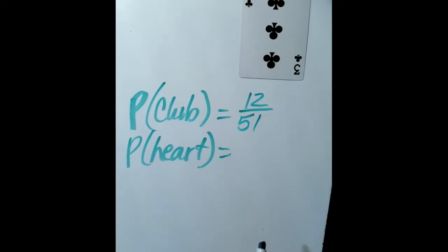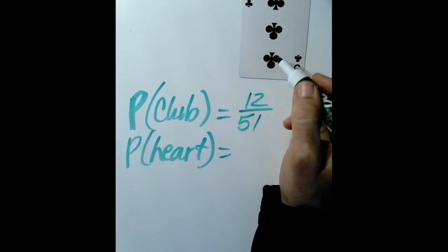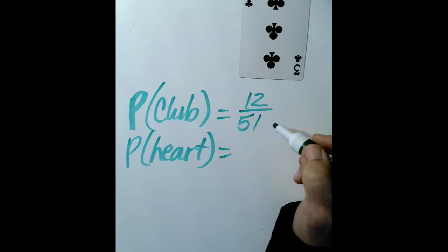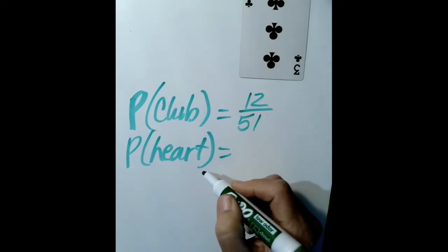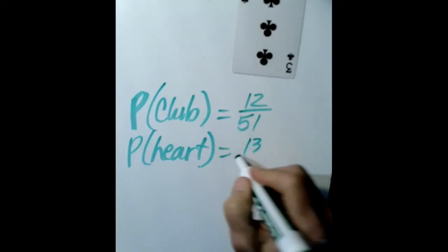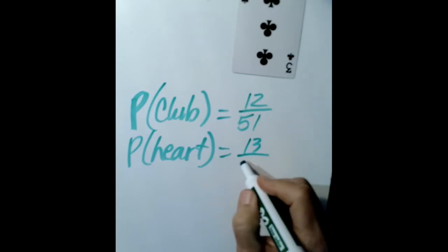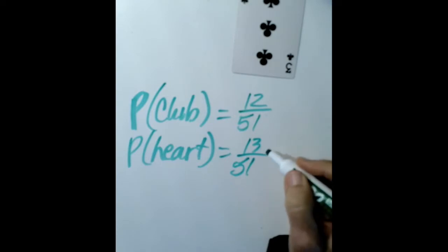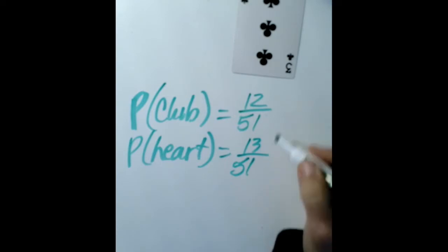After pulling the three of clubs, what would be the probability of pulling a heart? Well, we still have all 13 hearts left, but only 51 cards total. So we have a greater chance of getting a heart now than a club, because there is one club missing from the deck.